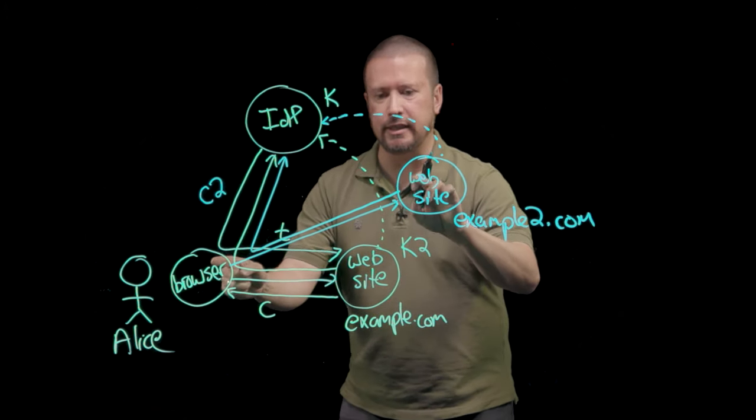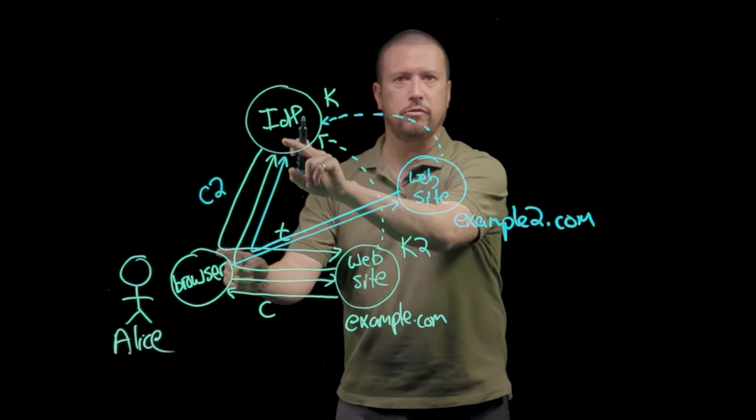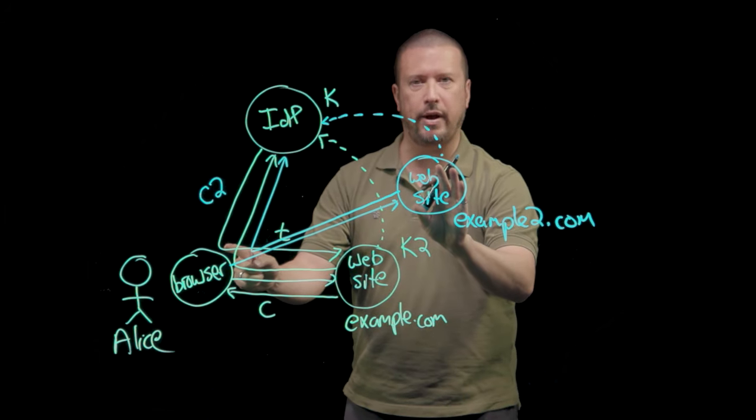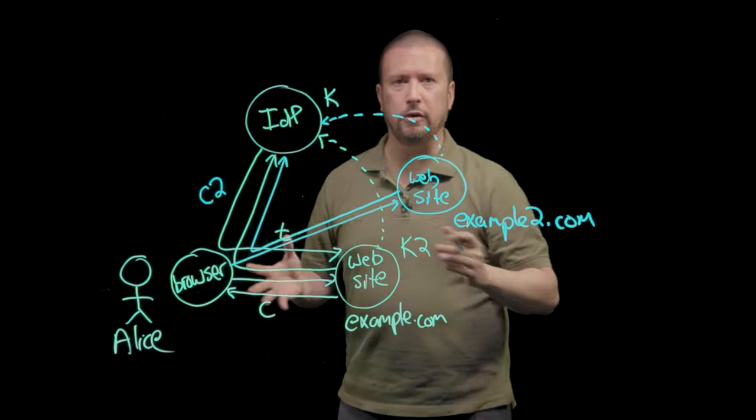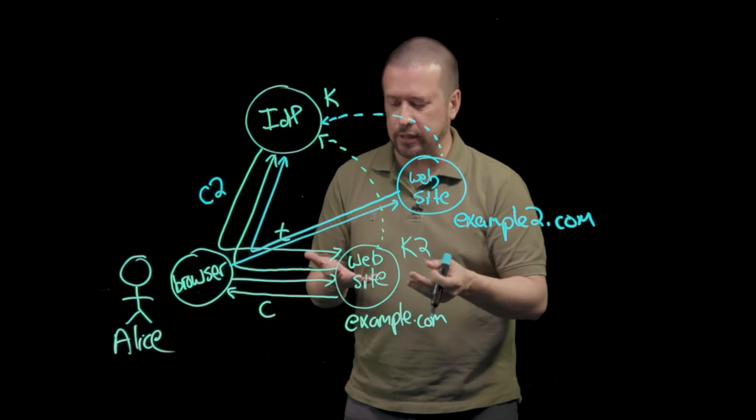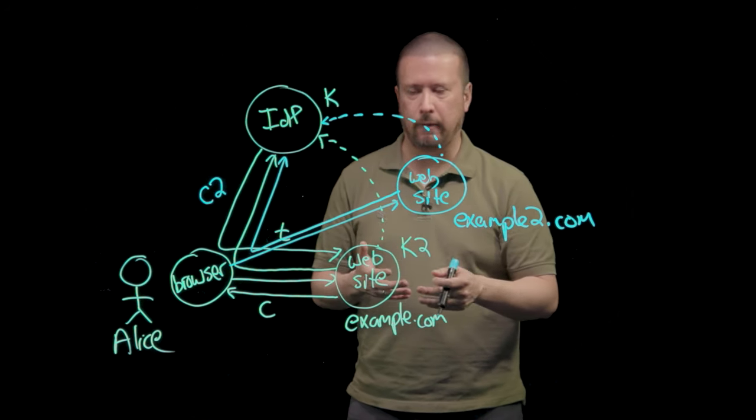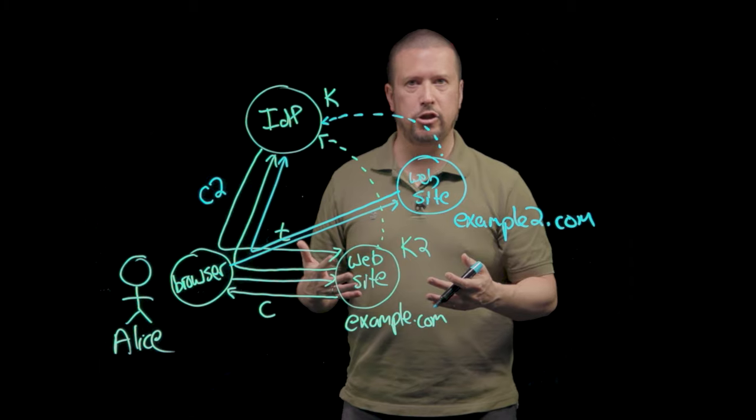So, now, when Alice sends this next authentication request through to the identity provider from the second website, the cookie can be used to authenticate her, meaning she doesn't need to enter her name and password or do any kind of interactive authentication here.